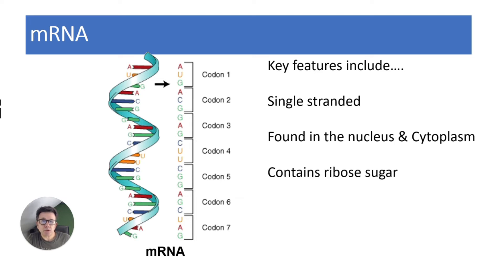It contains ribose sugar and contains uracil instead of thymine. So it has A, U, C, and G. In difference to DNA, there are no hydrogen bonds because it is single-stranded.